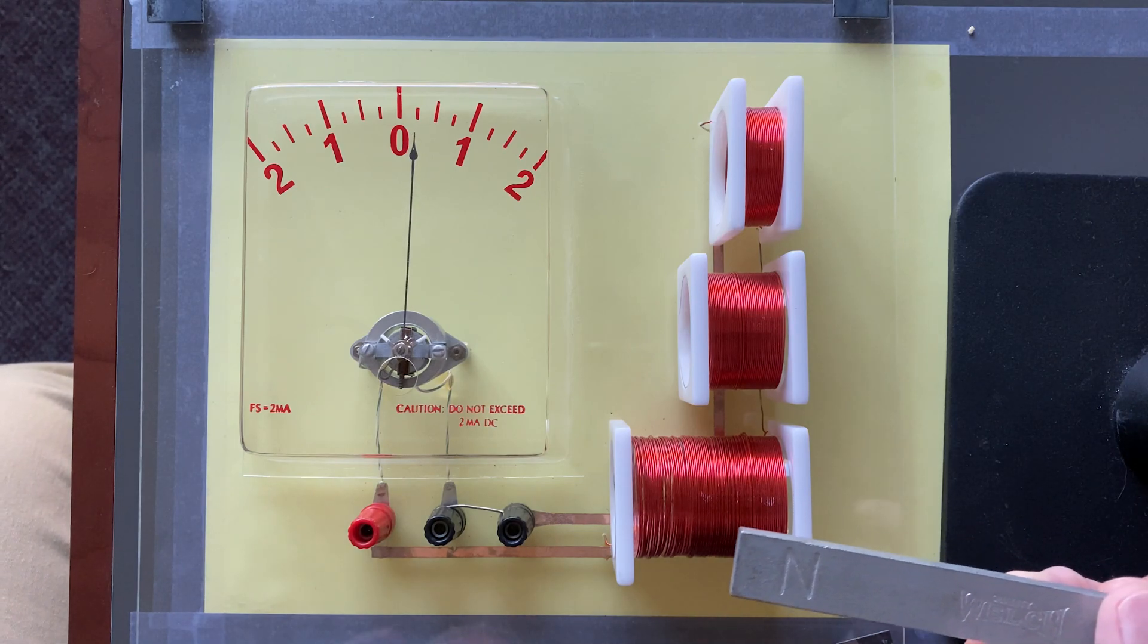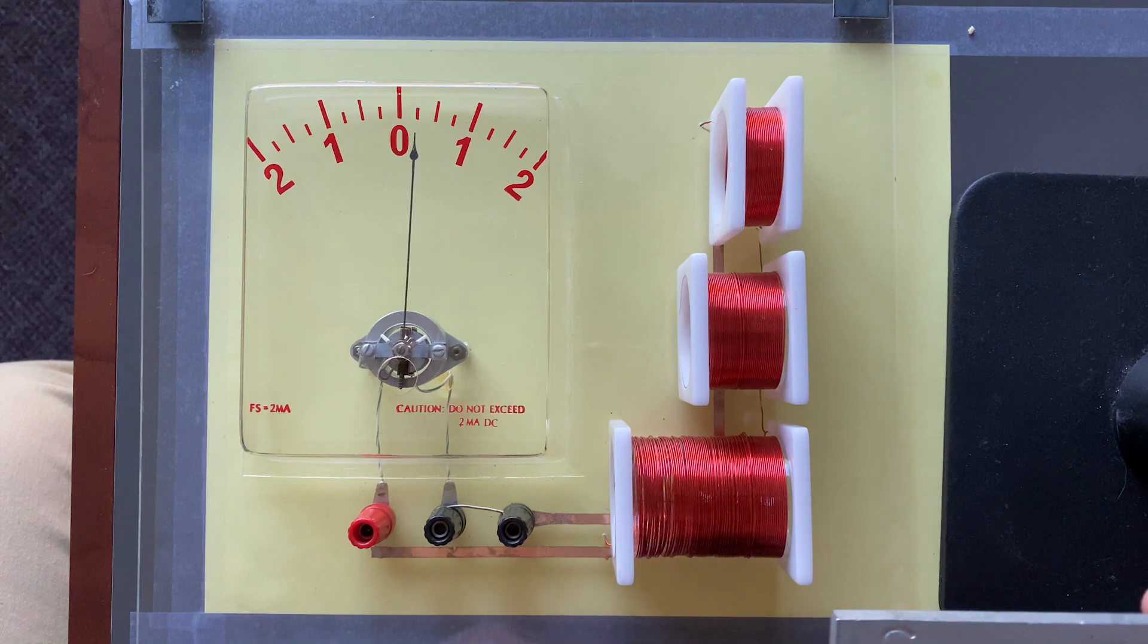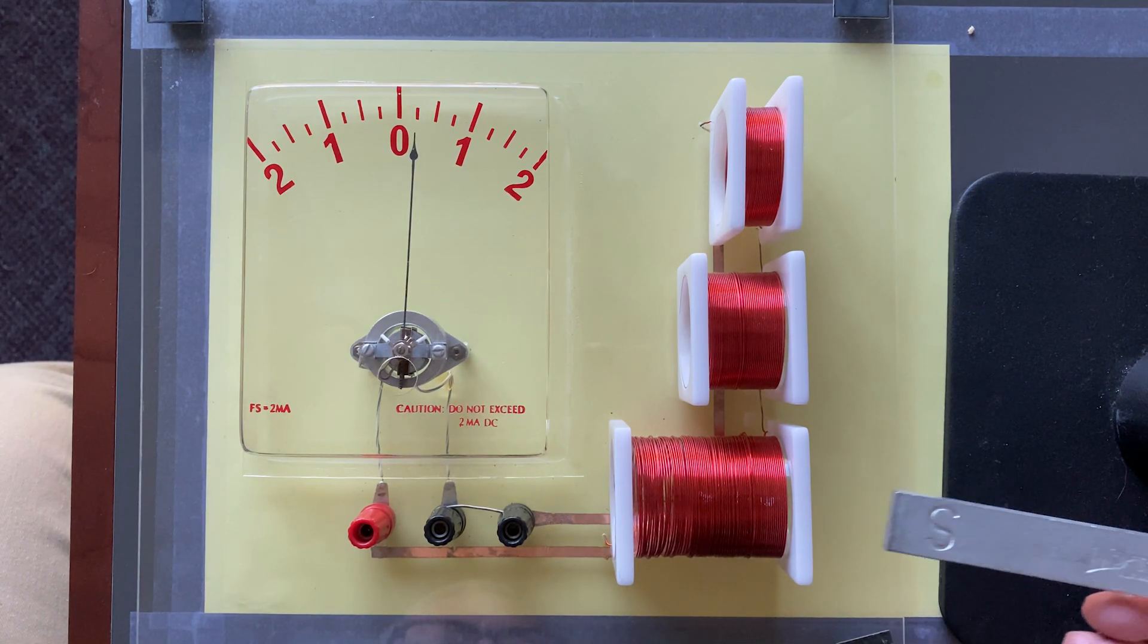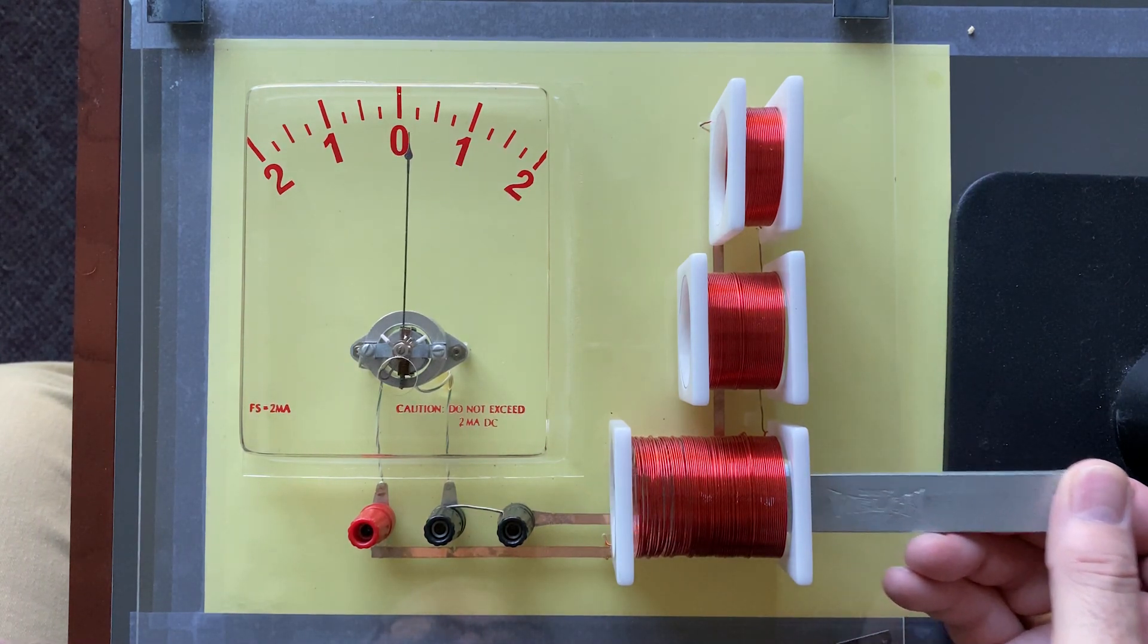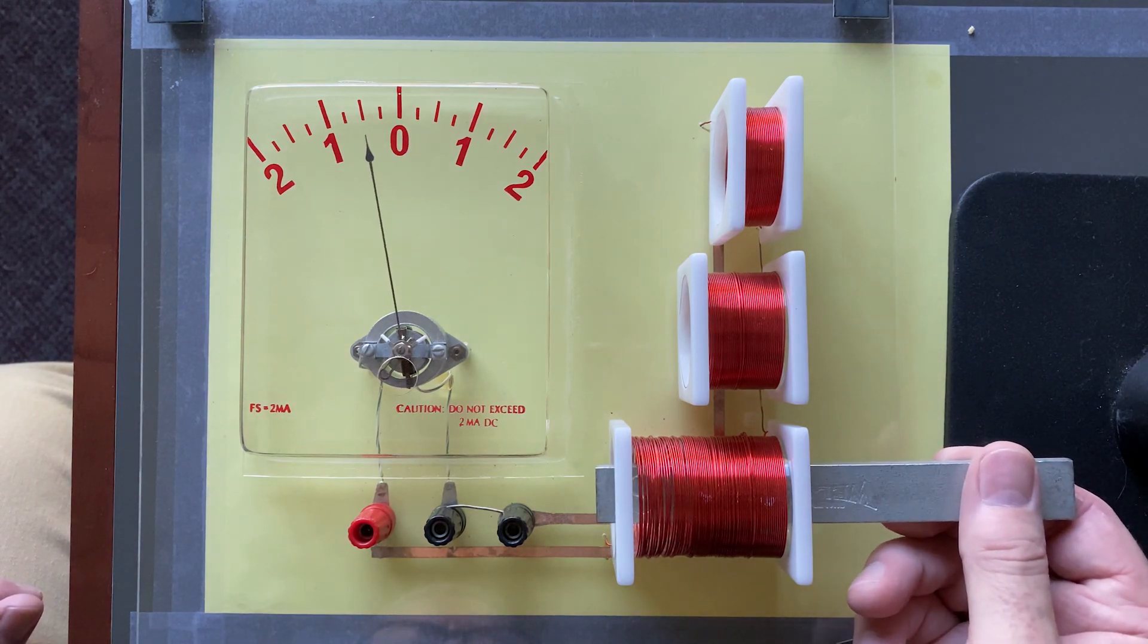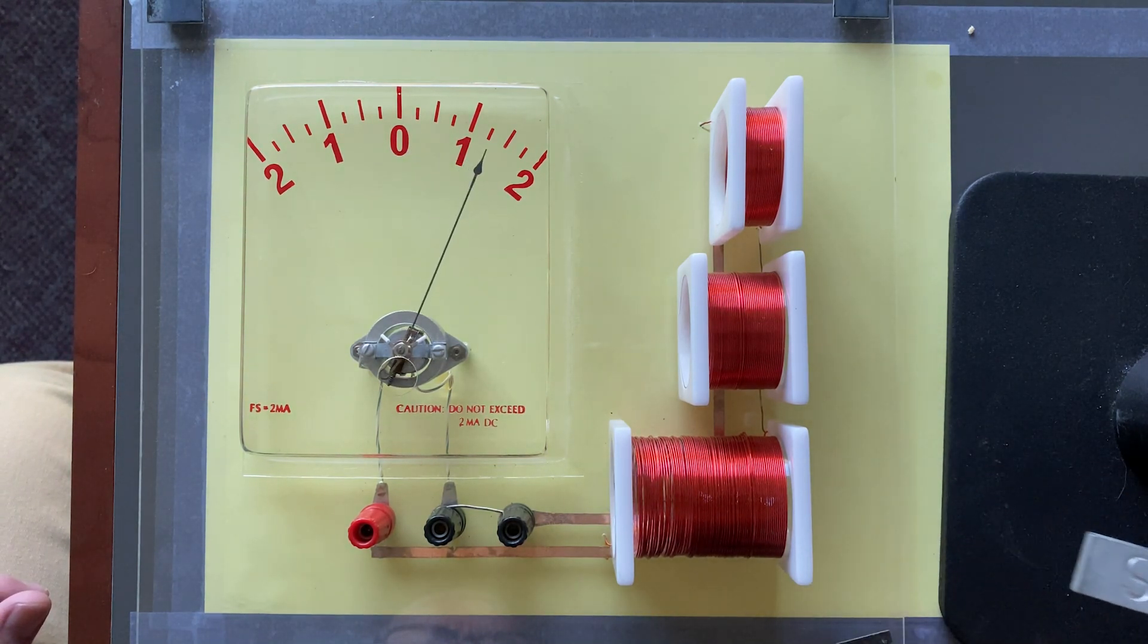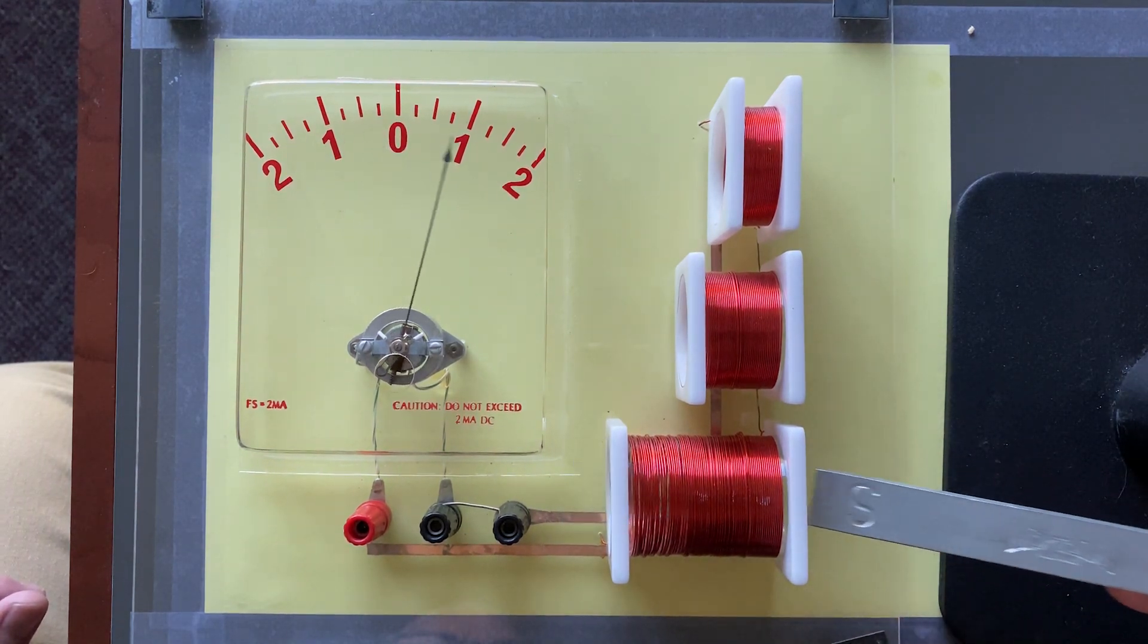Alright, but the deflection also depends upon the polarity of the magnet. So, let's turn it around and see if it holds for this big magnet down here. Wait a minute, which way was it? In to the right. Out to the left. In to the left. And then out to the right. So, you can see the polarity plays some role here.